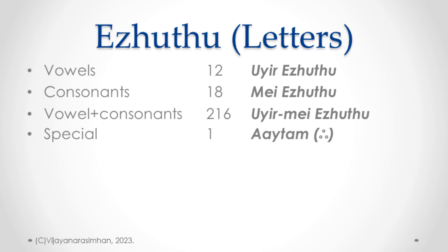The idea is that you cannot pronounce a pure consonant. Even if you try, you need a vowel before or after it — this is true for any language. In Tamil, the first consonant is Ka. If you notice, after the Ka sound, you have to make the A vowel sound — or you can add the vowel before: Ik. So when people think they are pronouncing the pure consonant, they are actually adding a vowel. Consonants need a vowel.